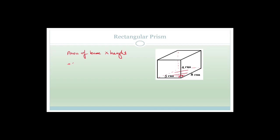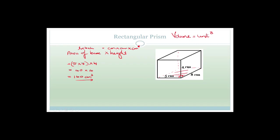The area of the base is 5 times 8, times the height of 4. So 5 times 8 is 40, and multiplying by 4 gives 160 cubic centimeters. Please remember that volume is the area of base times height, or length times breadth times height. Centimeters multiplied by centimeters multiplied by centimeters gives centimeters cubed. The unit for volume is always whatever the unit is cubed.